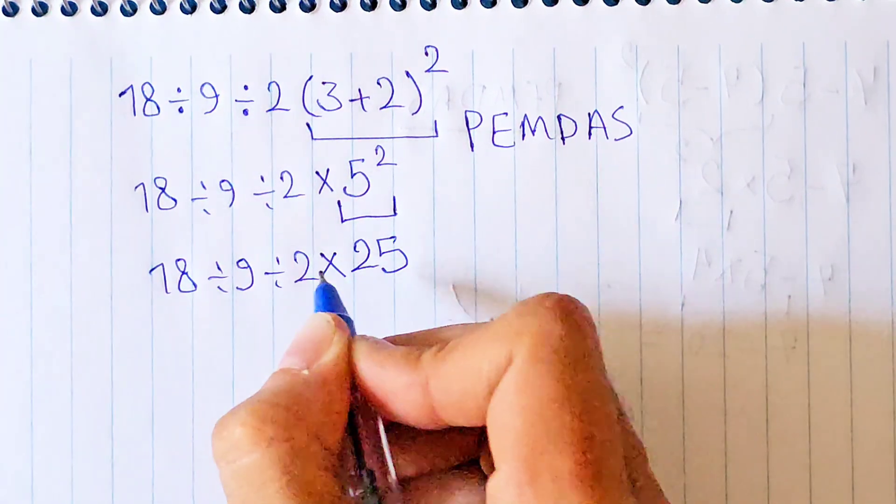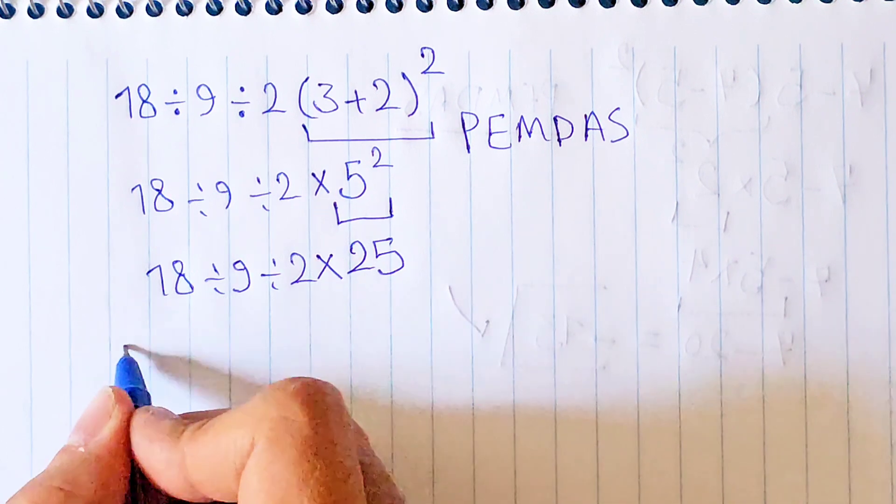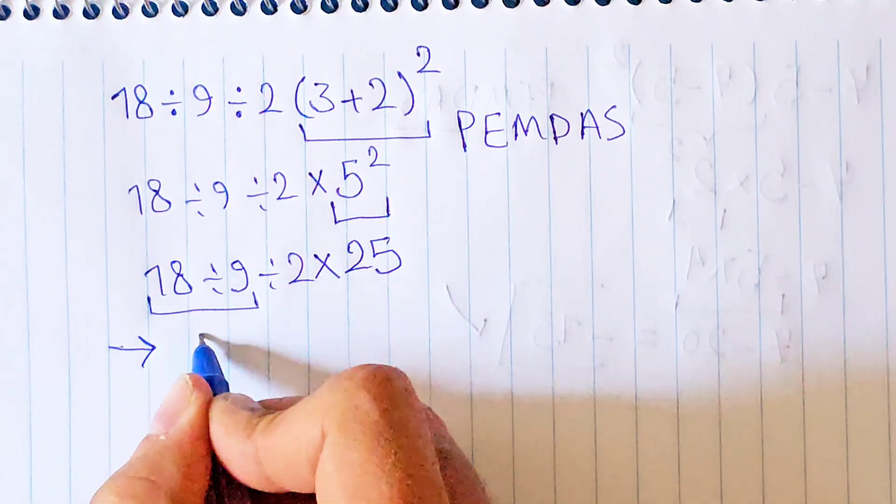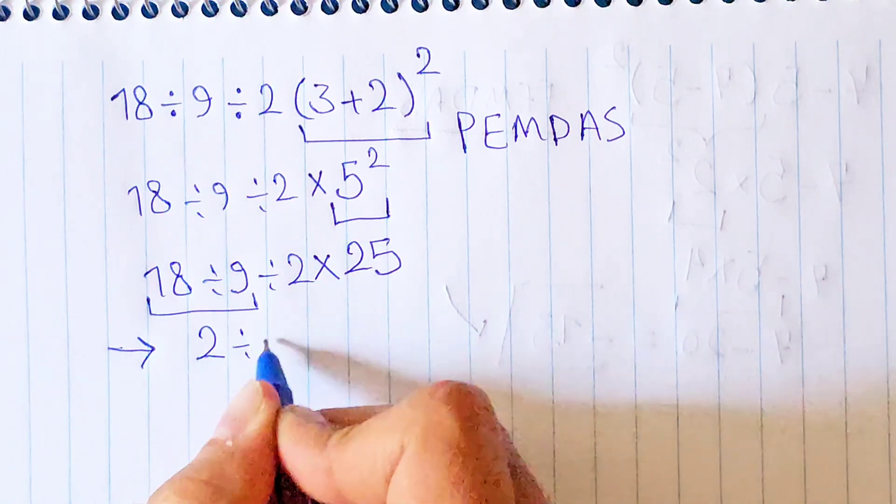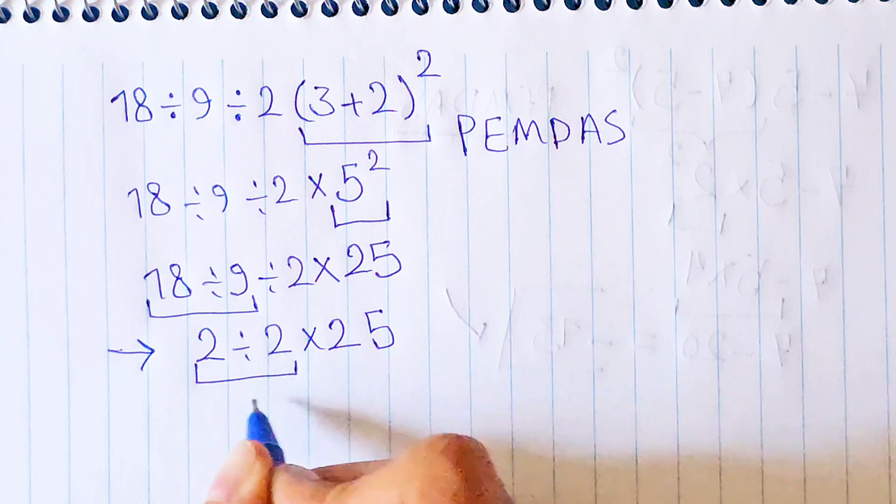Because multiplication and division have the same priority, we start from the left side of the question and simplify. 18 divided by 9 equals 2. 2 divided by 2 times 25. Again we start from the left and simplify.